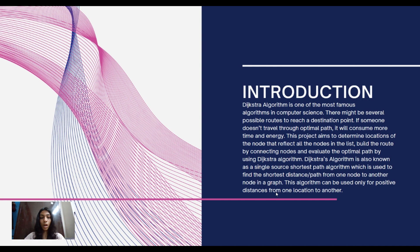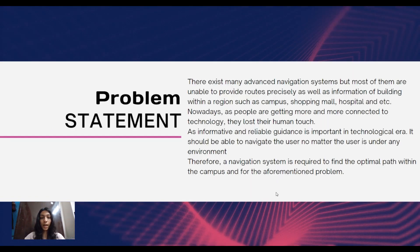This navigating system is used to find the shortest path from one place to another within a place. The problem statement is that there are many other navigation systems, and some of them cannot find the optimal path. People usually prefer to find the shortest path so they can reach the destination easily and faster, so a reliable and precise guidance system is needed. Therefore, a navigation system will be a great choice to find the optimal path within the place.